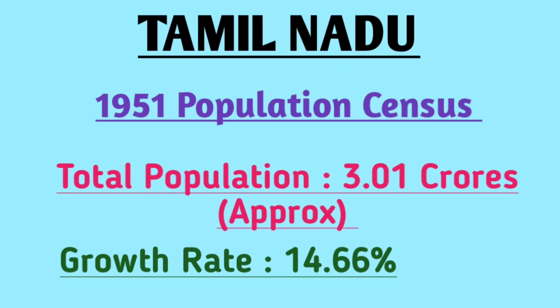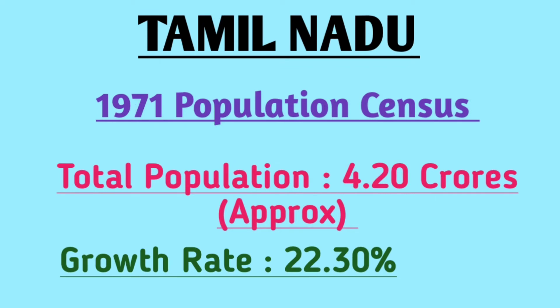In 1951, the total population of Tamil Nadu was 3.01 crores approximately, and the growth rate from 1941 to 1951 was 14.66 percent. In the 1961 official census, the total population of Tamil Nadu was 3.36 crores, in which the growth rate was 11.85 percent.